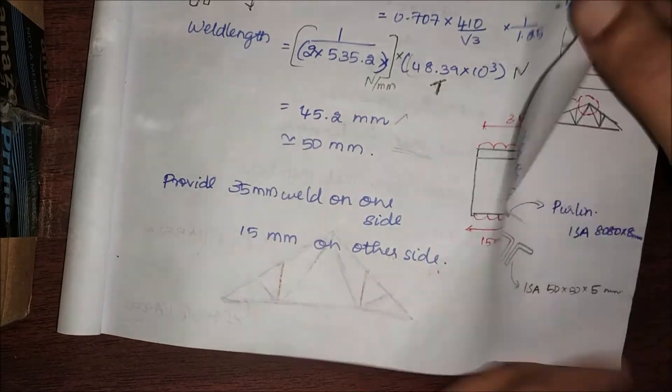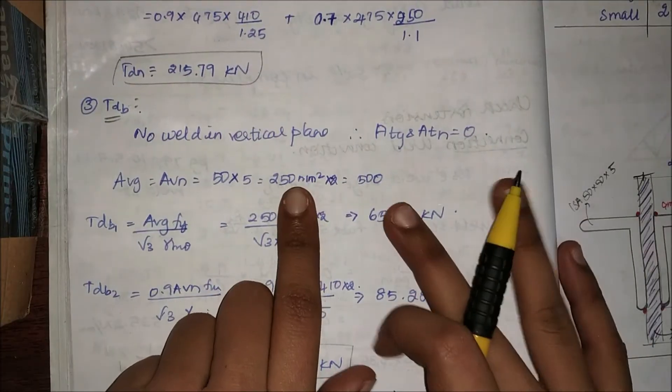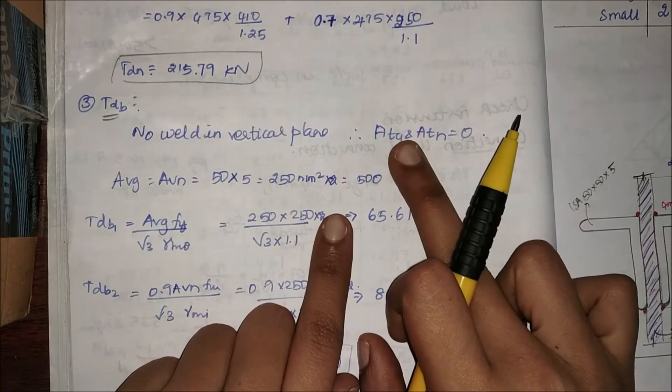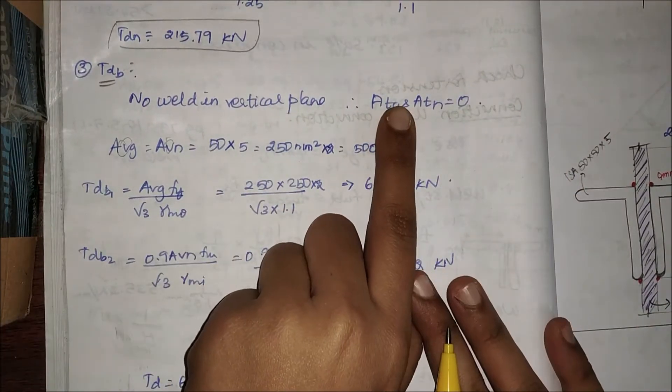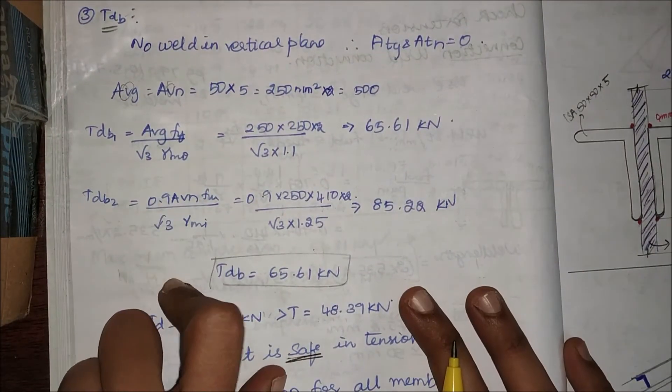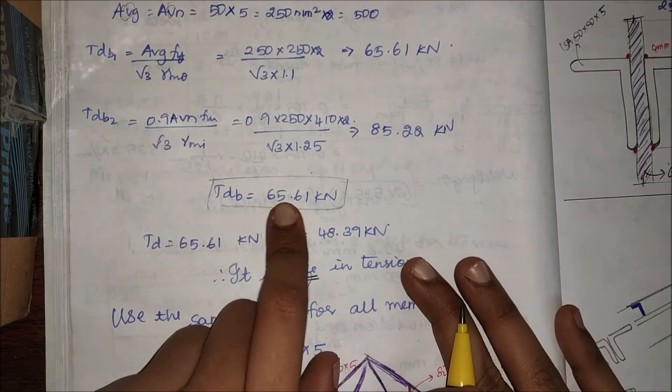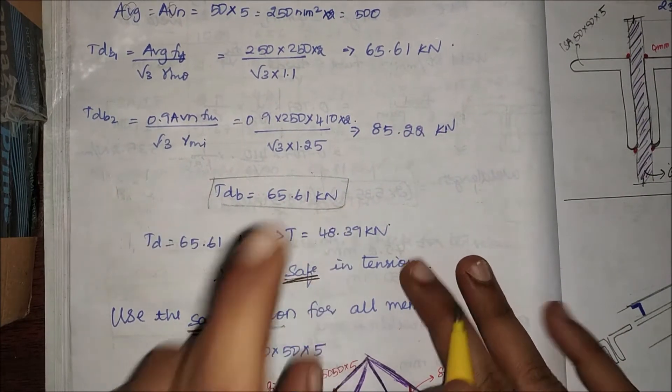Now coming to Tdb: since there is no weld in the vertical plane, there will not be any tension acting on the member, only shear.